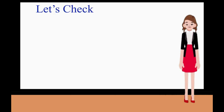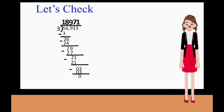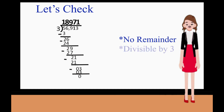Let's check. 56,913 divided by 3 is equal to 18,971. The answer has no remainder or left over. This means that 56,913 is divisible by 3.